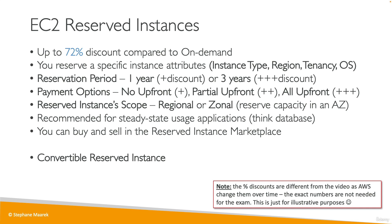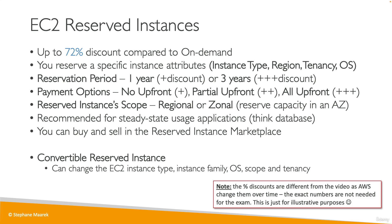There is a specific kind called the convertible reserved instance, which allows you to change the instance type, the instance family, the operating system, the scope, and the tenancy. And because you have more flexibility, you get a bit less discount — you get up to 66% discount. So that's for reserved instances.